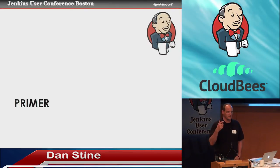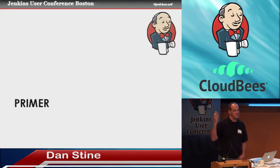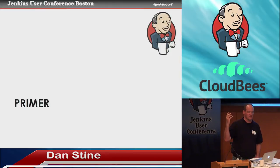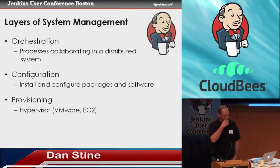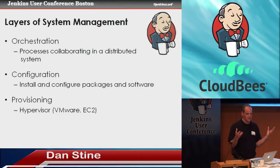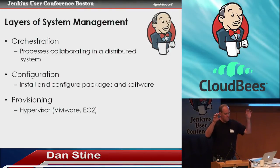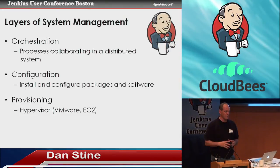When we talk about managing computer systems, we can think in three basic layers. Working from the bottom up: first is provisioning — getting a machine, which is generally done in a virtual way these days through a hypervisor. The next layer is taking that machine and installing and configuring all the software that's supposed to be there. The top layer is orchestration — having those machines work together to provide value to the business in a distributed fashion. Chef, which we'll discuss in this talk, operates right in that middle configuration layer.